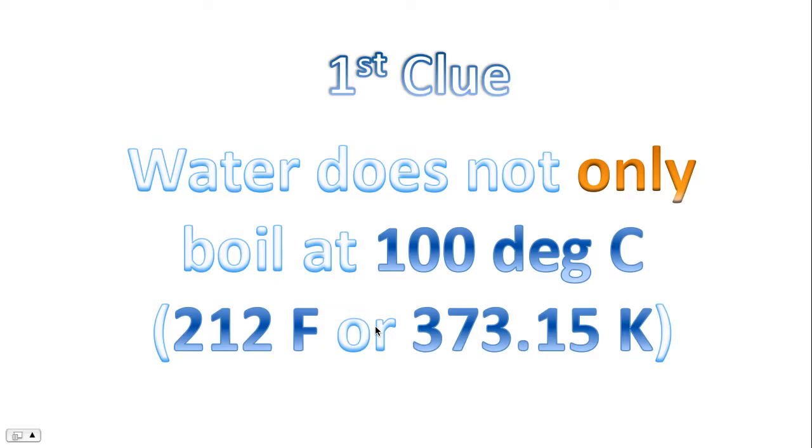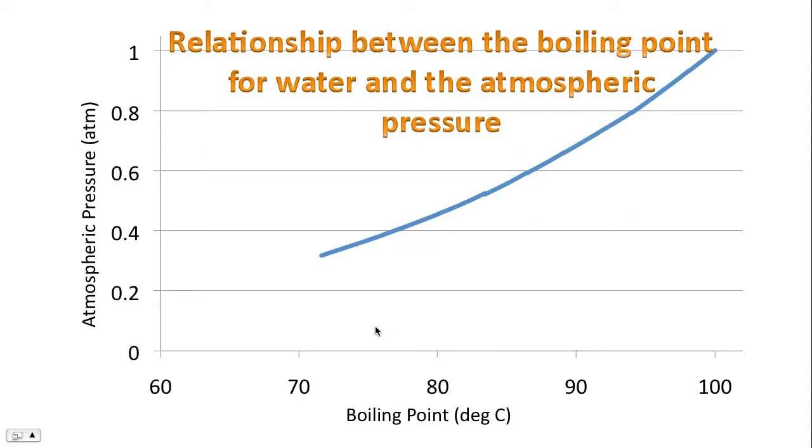The first clue: water does not only boil at 100 degrees Celsius. Here we have a graph that examines the relationship between the boiling point for water and the surrounding atmospheric pressure. On the y-axis we have atmospheric pressure, and on the x-axis boiling point.